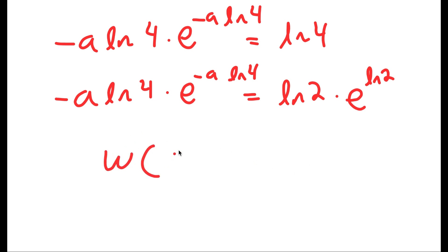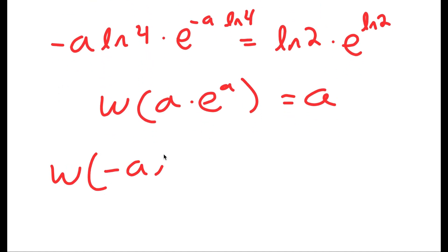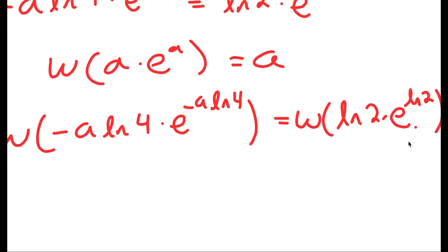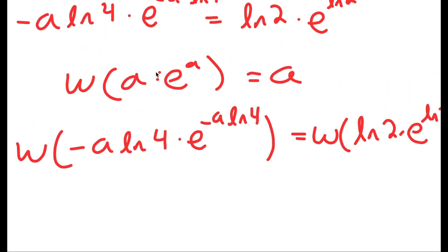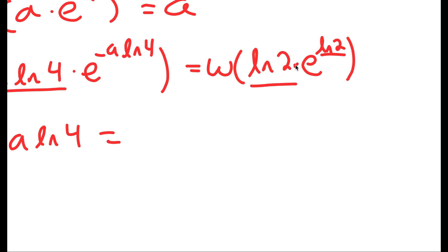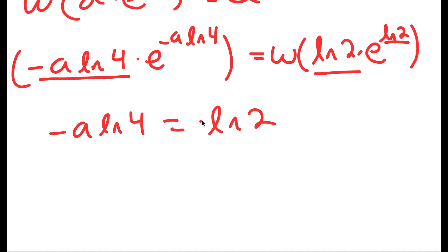Now I'm going to use the Lambert W function, which states that W of something in the form a times e to the power of a equals a. I take the W of both sides: W of negative a times ln 4 times e to the power of negative a times ln 4 equals W of ln 2 times e to the power of ln 2. This left side is in the form a times e^a with a being negative a times ln 4, so this simplifies to negative a times ln 4. The right side, with a being ln 2, gives ln 2.